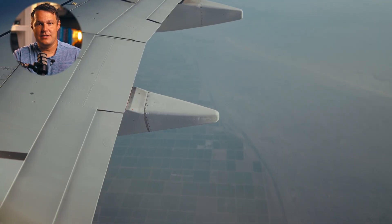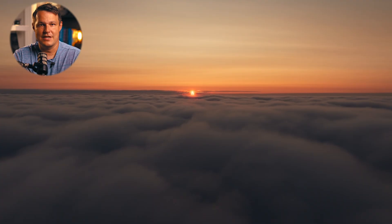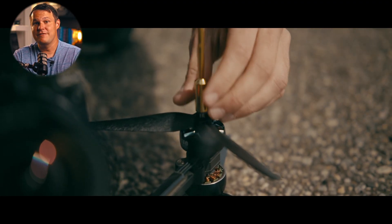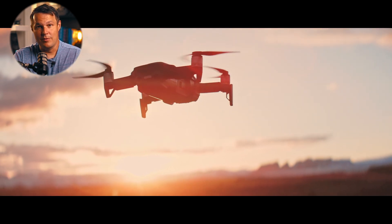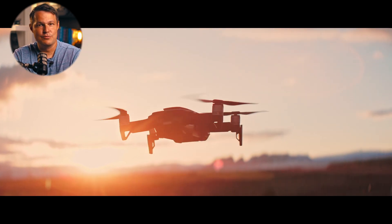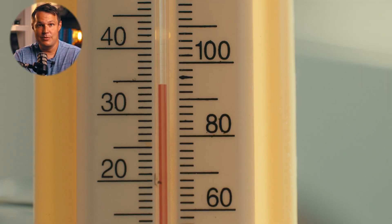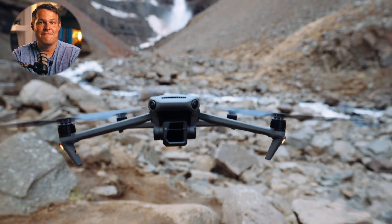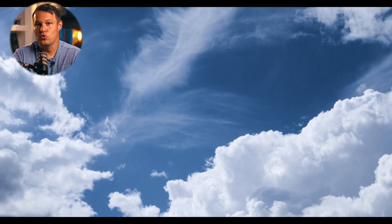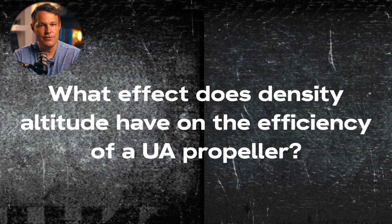High density altitude means thin air — air that does not have a lot of pressure. It's called high density altitude not because you're physically higher, but because the air behaves like you're at a higher altitude. Propellers function most efficiently in denser air because there are more air molecules for the propeller to push against. As air becomes less dense — due to higher physical altitude, higher temperature, or higher humidity — performance decreases.